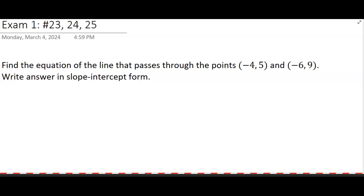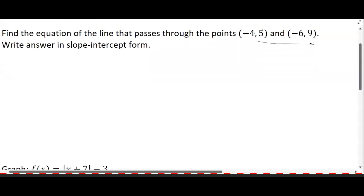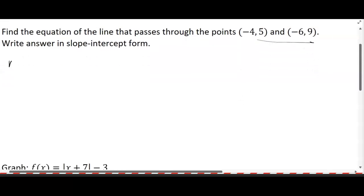On problem 23, we want to find the equation of the line that passes through these two points. We're going to use two formulas: one is the slope formula. The slope formula says take the difference in the y's and divide that by the difference in the x's, and we usually write it that way.